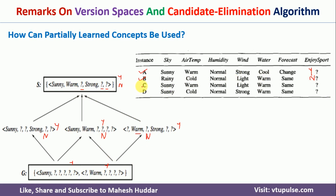Coming to the third example: sunny, warm, and strong vs. sunny, warm, and light — light does not match strong, so the first hypothesis classifies it as no. Sunny and strong vs. sunny and normal — no match, classified as no. Sunny and warm vs. sunny and warm — perfect match, classified as yes. So for the third example we have no, no, and yes so far.